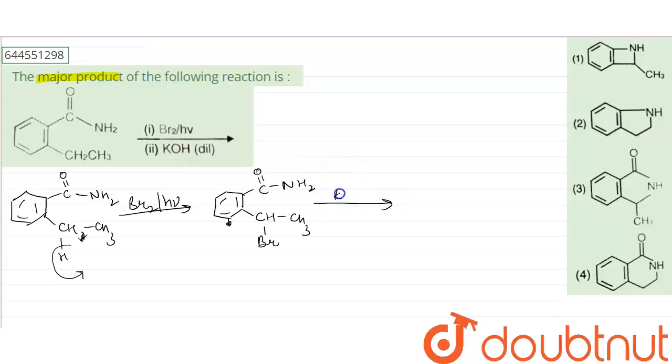Now in the second step we added KOH in dilute form. So what is KOH? K positive and OH negative. So this OH will take away one hydrogen from here, and it will get attached to the surface like this.